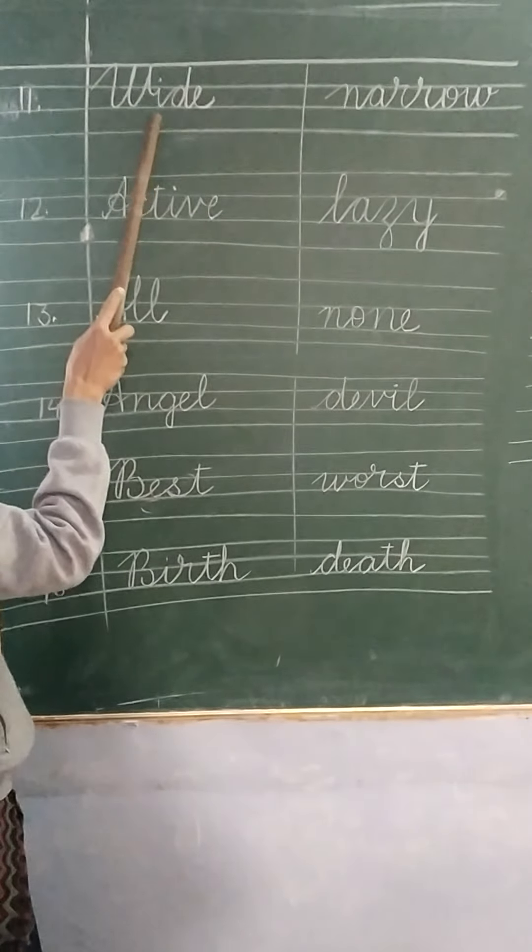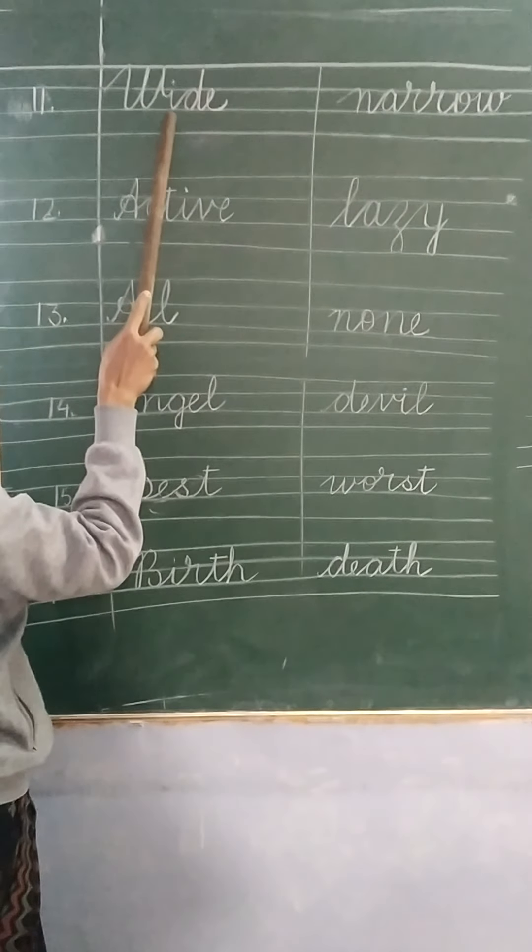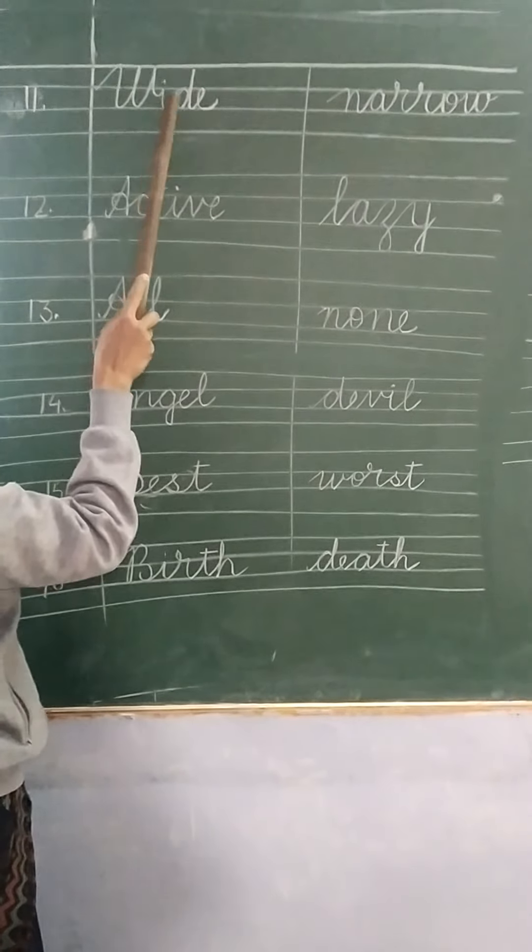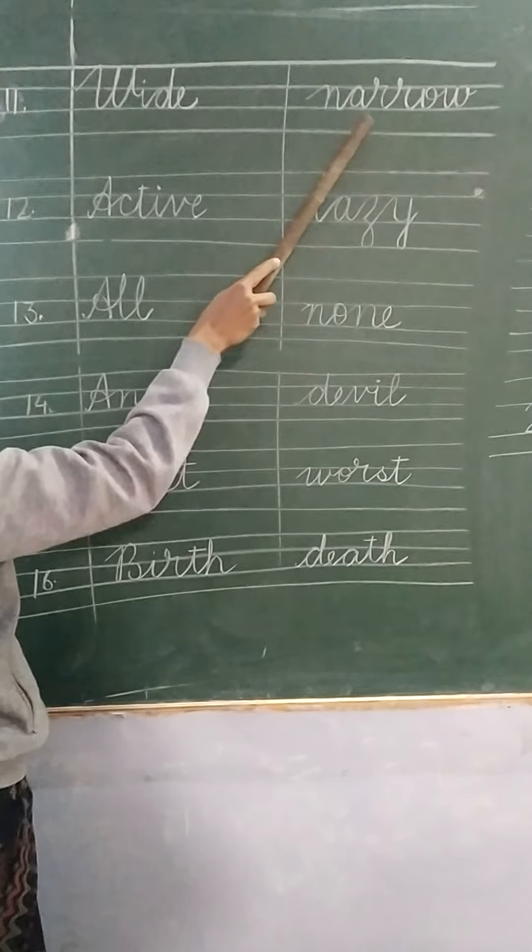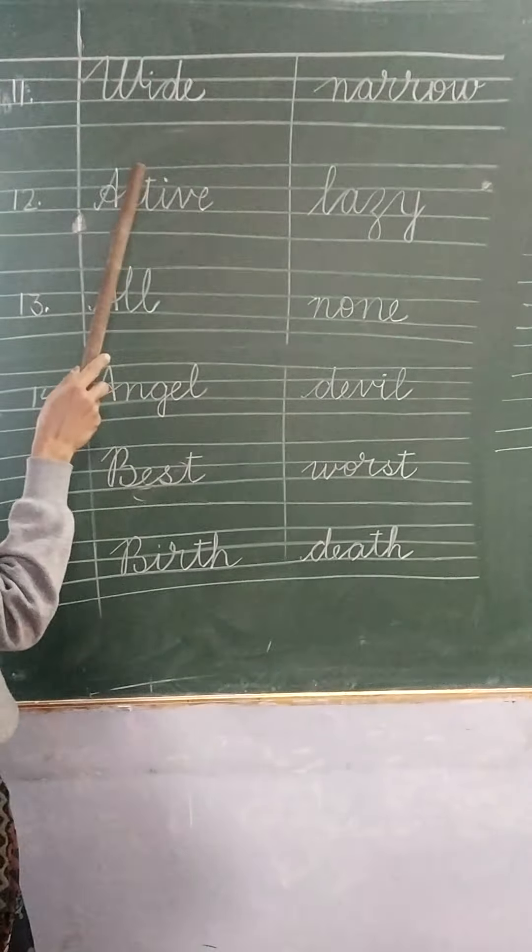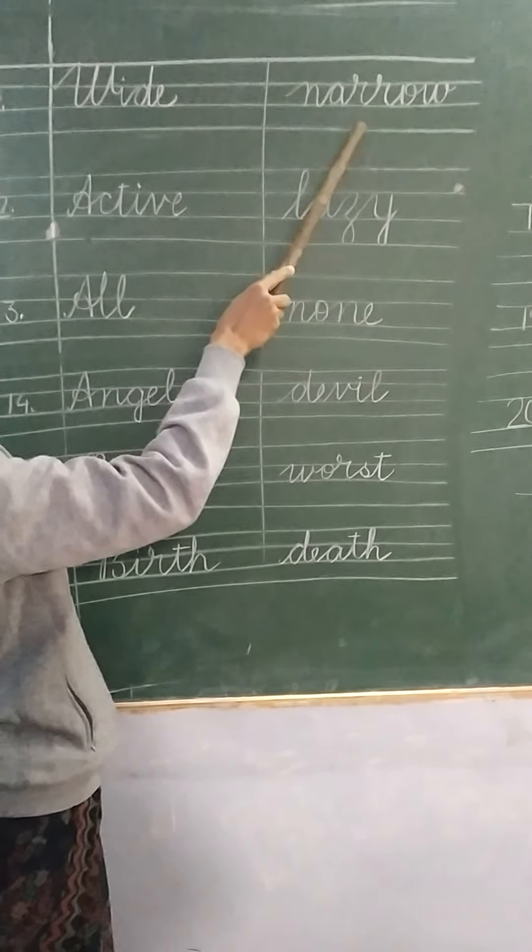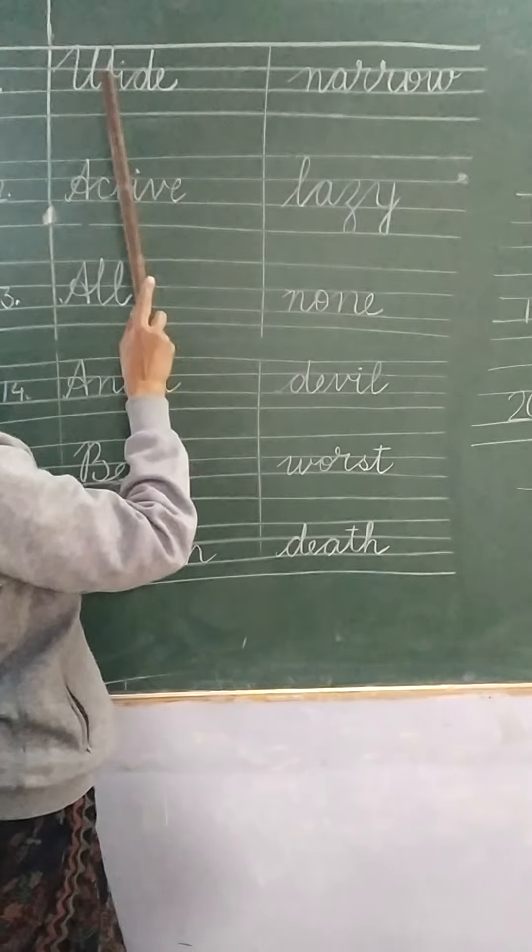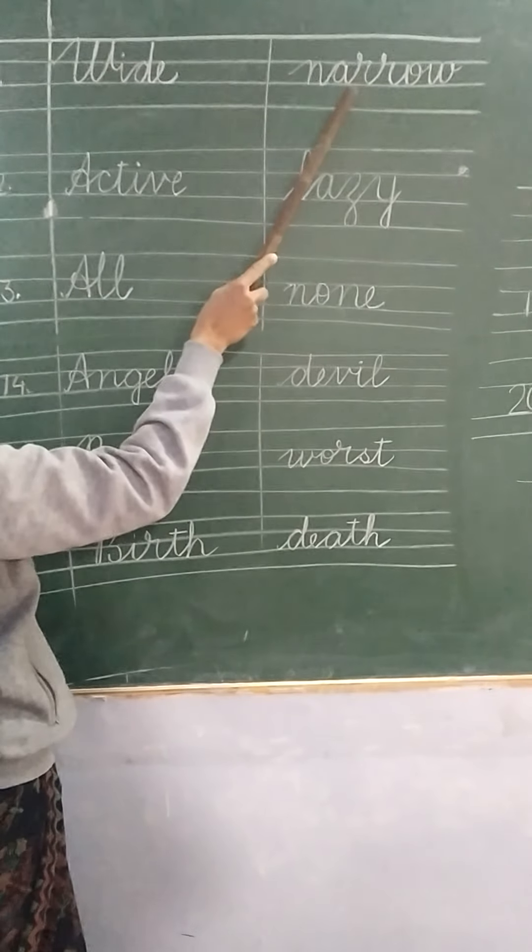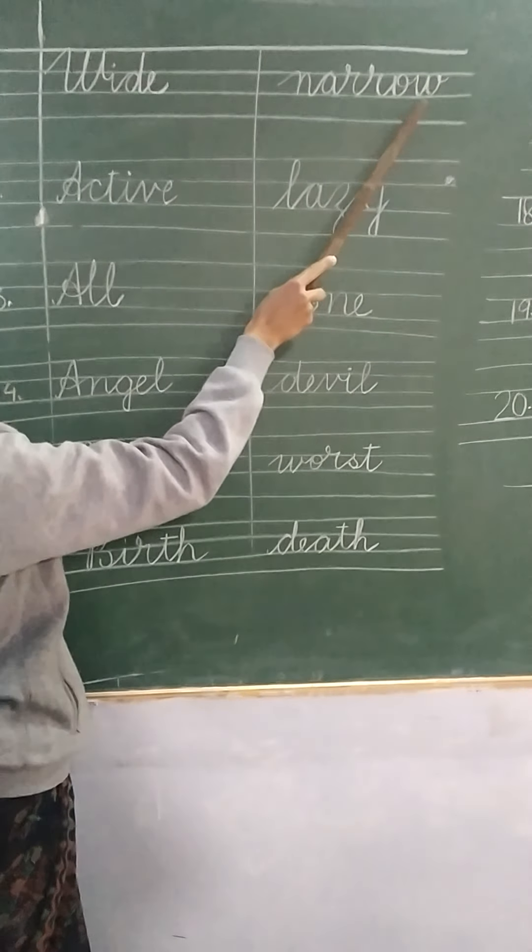11th word is wide. Wide. W-I-D-E wide. And the opposite of wide is narrow. Like road. The very big road is called wide. And the small thin road is called narrow. So opposite of wide is narrow. N-A-R-R-O-W narrow.